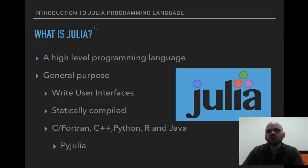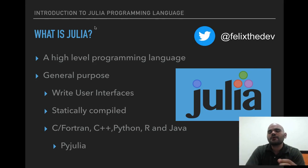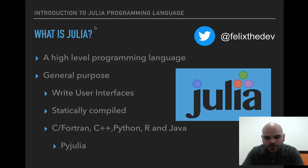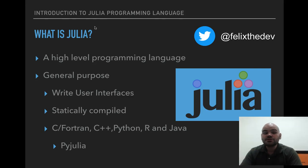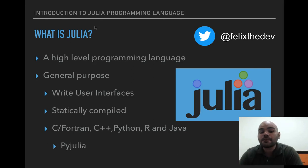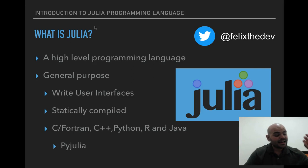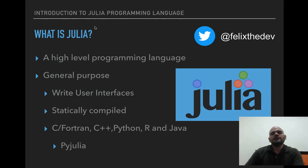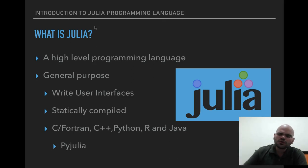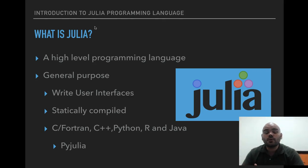So what is Julia? Julia is a programming language that is also known as a high-level programming language. It's a general purpose language. You can use it to write user interfaces. It is statically compiled, but something you need to know is that Julia is dynamically typed, which is very important. You can also use it to deploy on a web server.